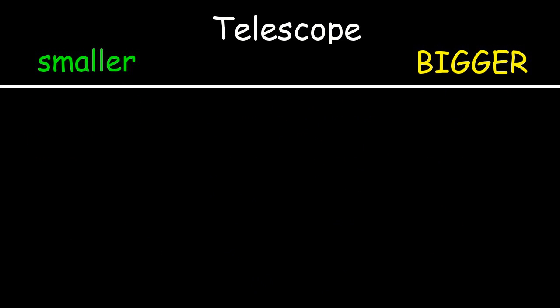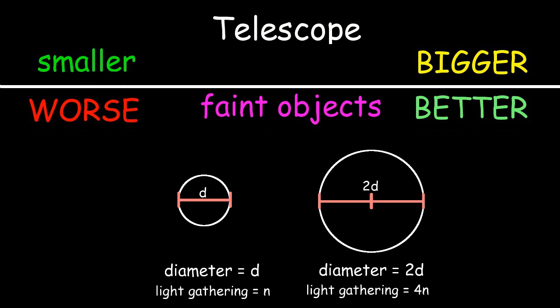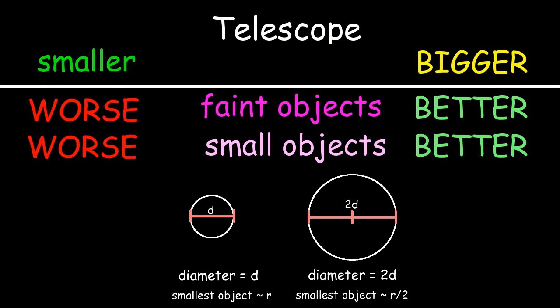Magnification is largely a red herring here; it's basically all about aperture. The ability of a telescope to see faint objects goes through the square of the aperture, so if you double the size of the aperture you get four times as many photons, allowing you to see much fainter objects. The larger the diameter, the smaller the object you can see, but this time it goes linearly — double the aperture and you can see objects about half the size.